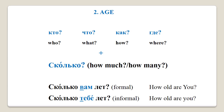Now let's see how we can use these new numbers to talk about age. So far we have come across four question words: кто — who, что — what, как — how, and где — where. Here we have a new question word which stands for 'how much' or 'how many': сколько. A formal question 'how old are you' becomes сколько вам лет, whereas informal 'how old are you' becomes сколько тебе лет.